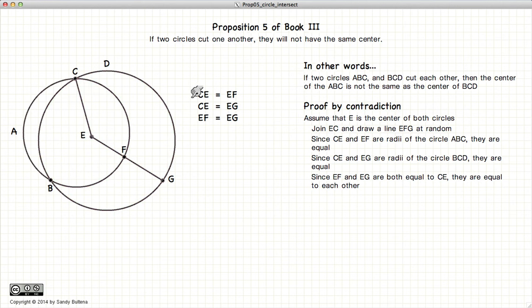But since we have CE equals EF and EG, that gives us that EF is equal to EG. But EF is definitely smaller than EG.